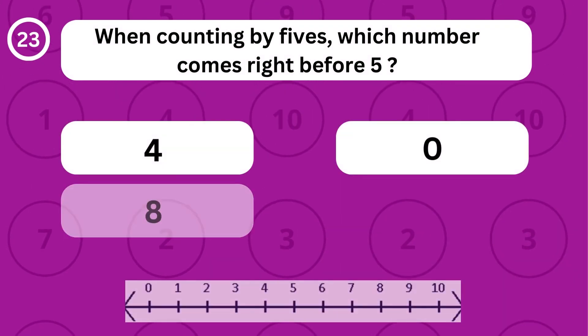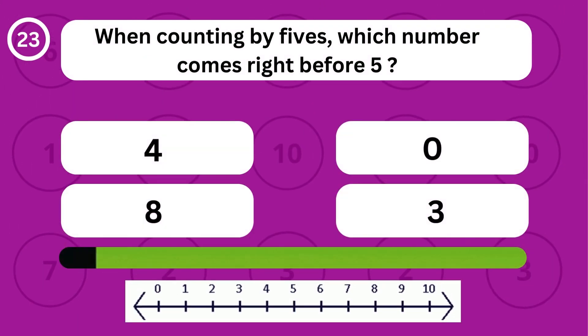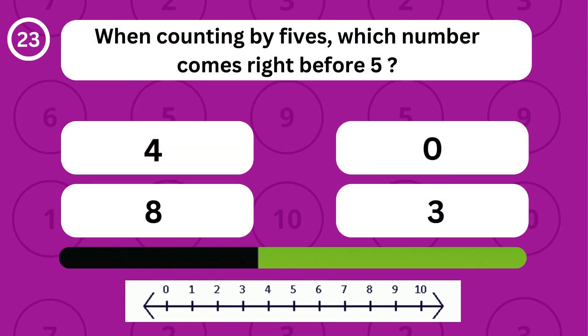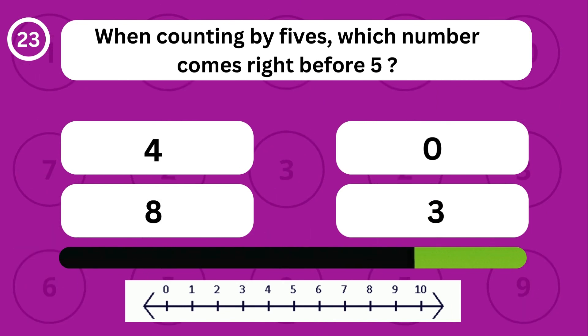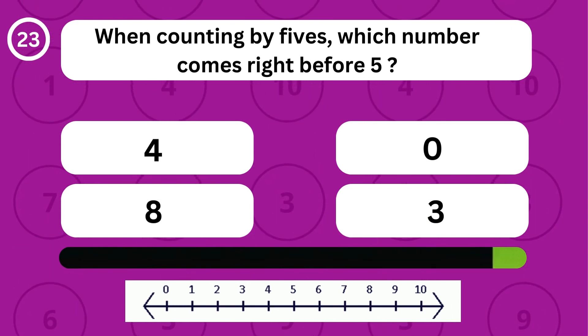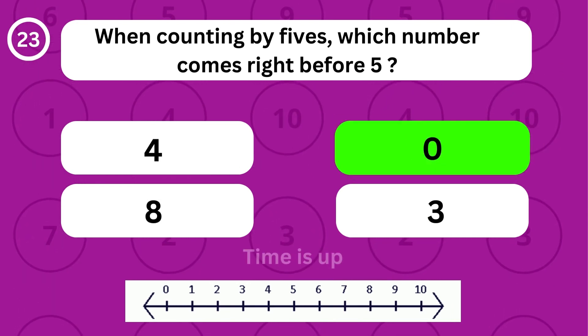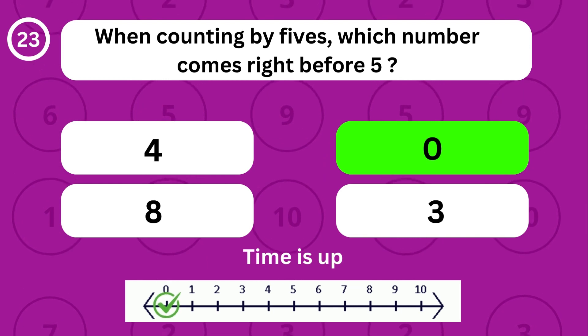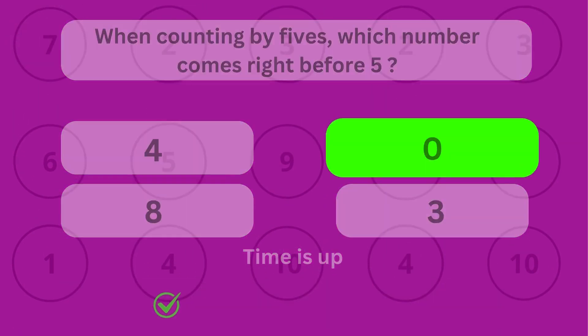When counting by fives, which number comes right before 5? When counting by fives, the number 0 comes right before 5.